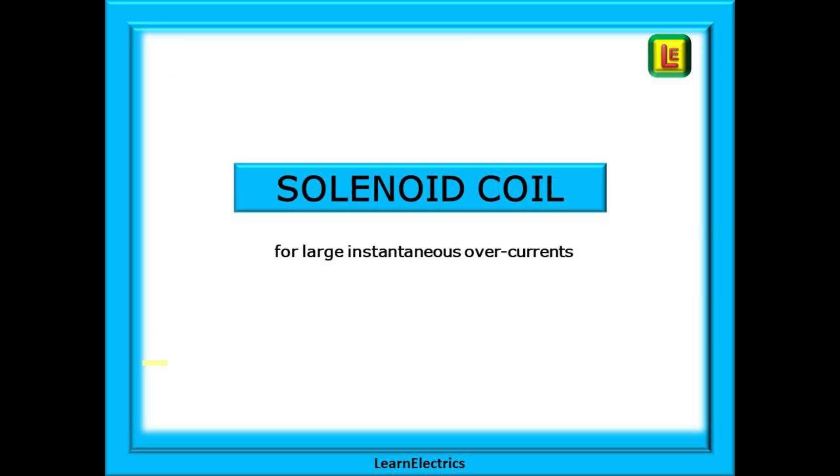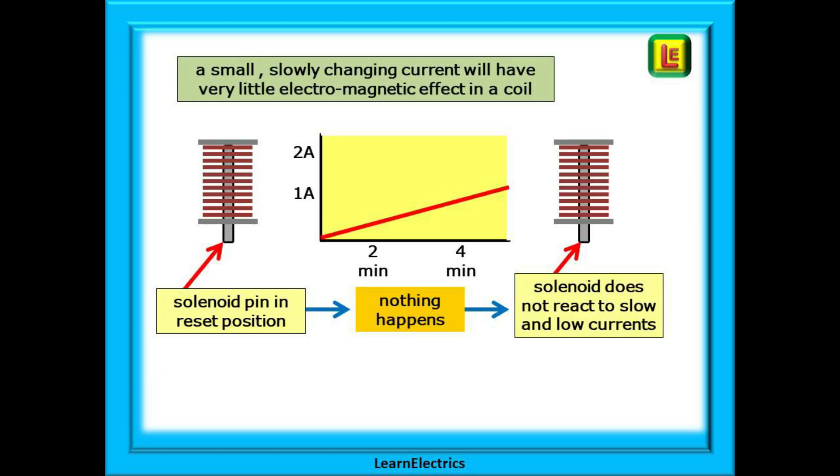Next we can look at the second mode of operation, the solenoid coil that responds to large and instantaneous overcurrents. A small slowly changing current will have little or no effect on a coil. It will flow through the coil just as it would through any other piece of wire.